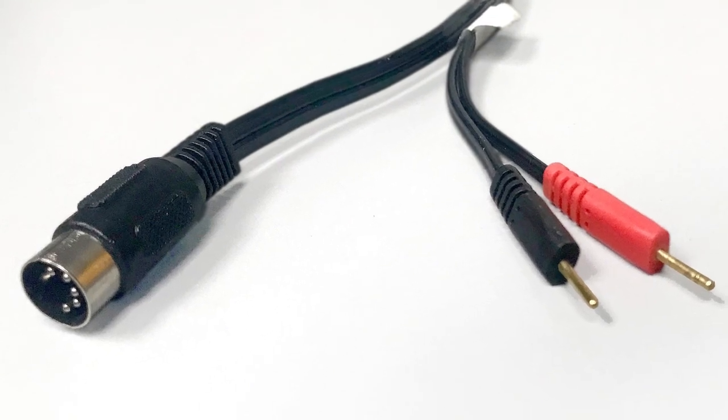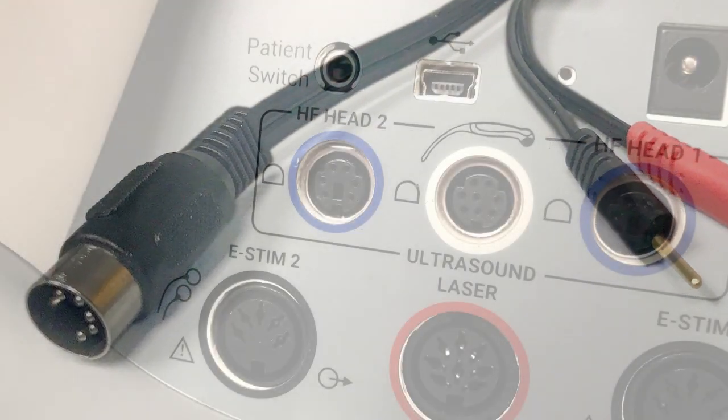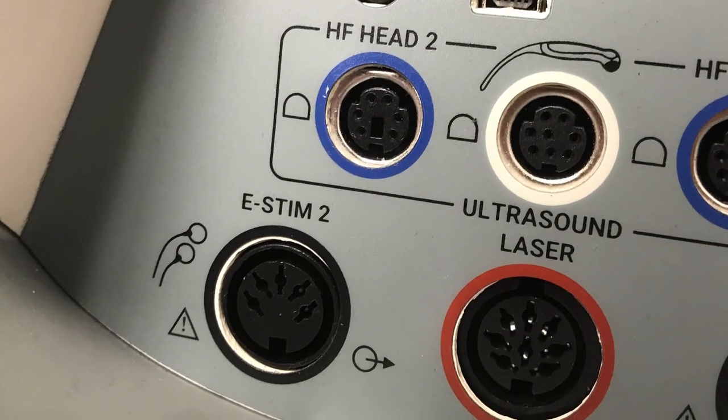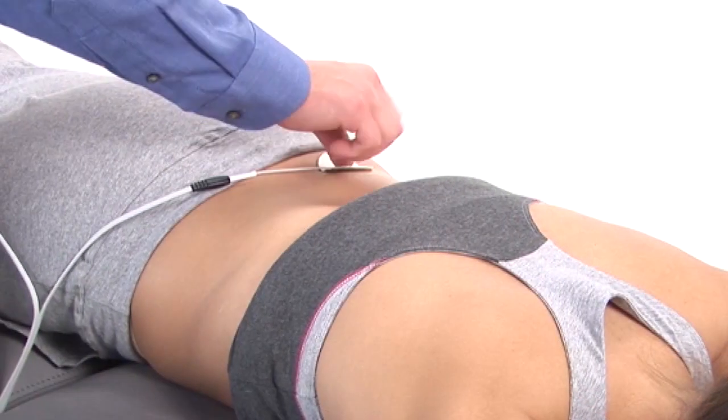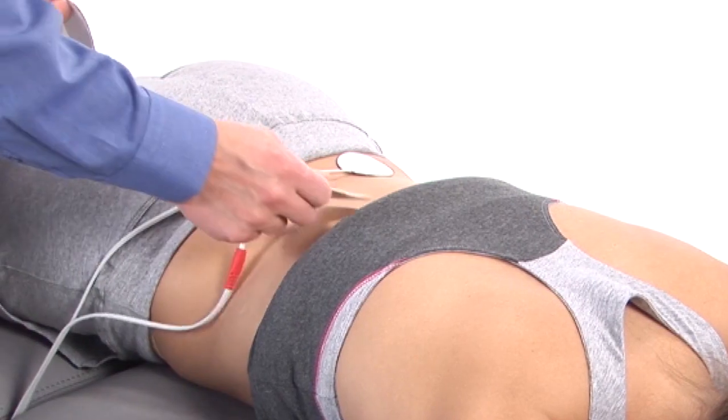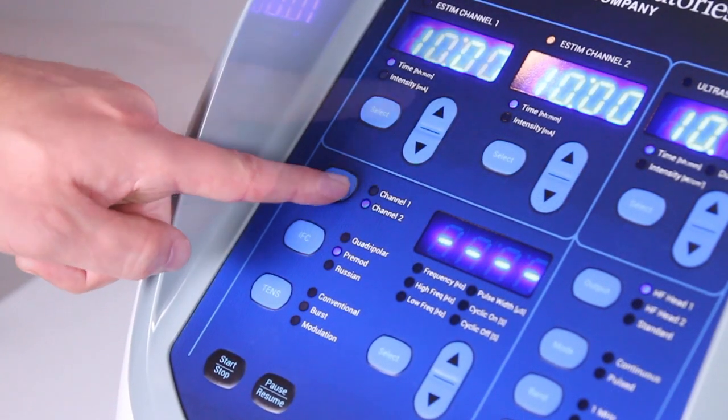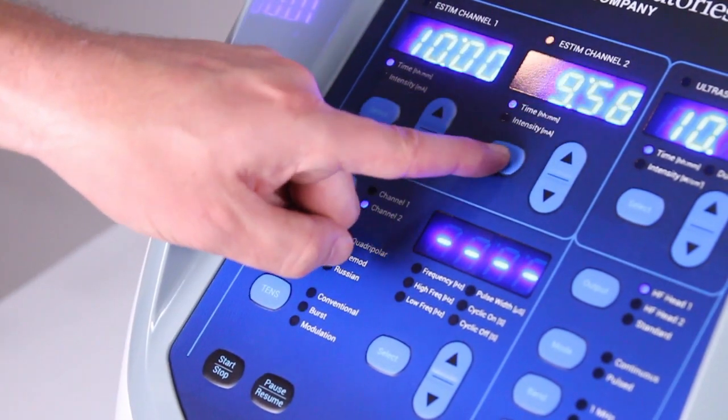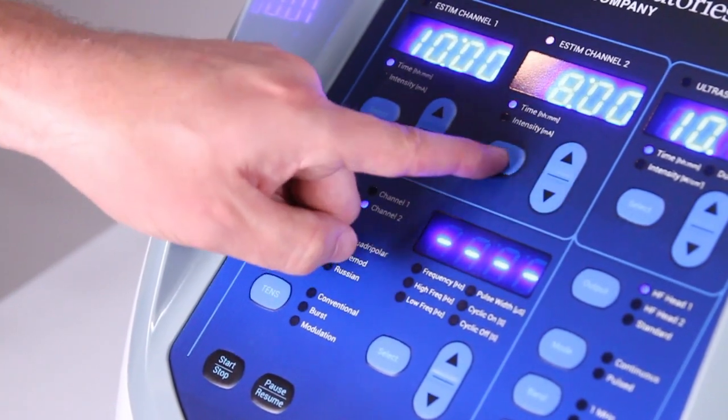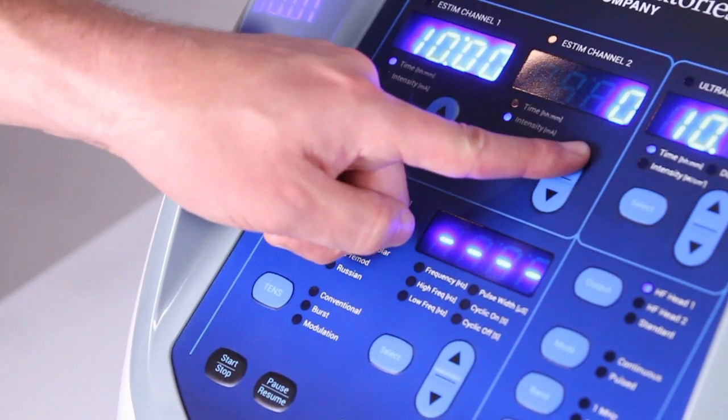A second channel of pre mod can also be added simultaneously with the first. Plug the second muscle stimulation wire into e-stim two and position the second set of pads on your patient. Now select channel two, press start, and enter your time and intensity settings. Settings for channel one and channel two can be completely different from one another.